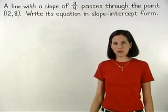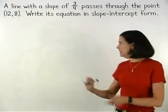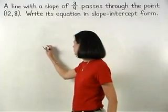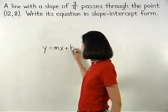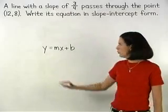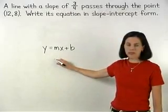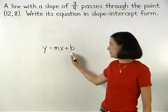Remember that slope-intercept form is the same thing as y equals mx plus b form. And to write the equation of a line in y equals mx plus b form, we need to know the values of m and b.